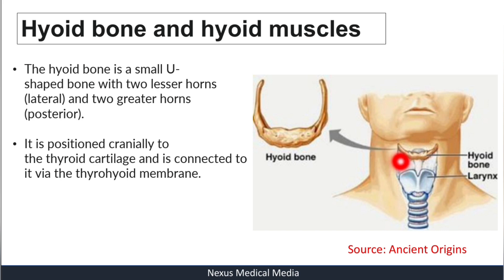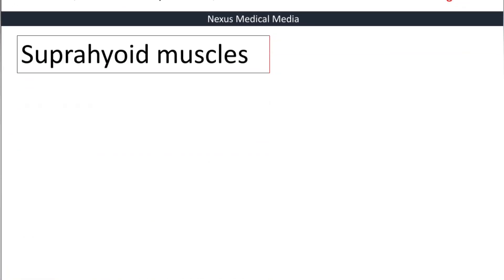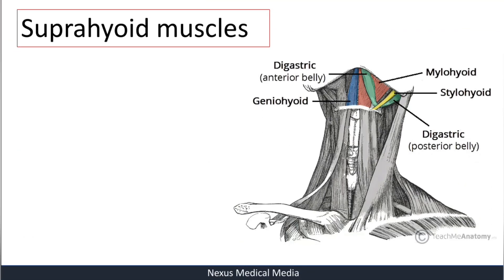The hyoid is connected to the thyroid cartilage via the thyrohyoid membrane. The hyoid muscles are distinguished into two groups: the suprahyoid muscles, which are above or cranial to the hyoid bone, and the infrahyoid muscles, which are below or caudal to the hyoid bone.